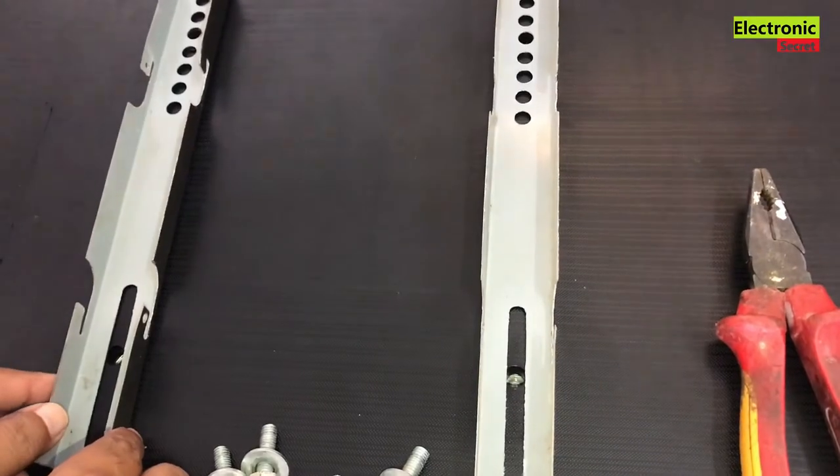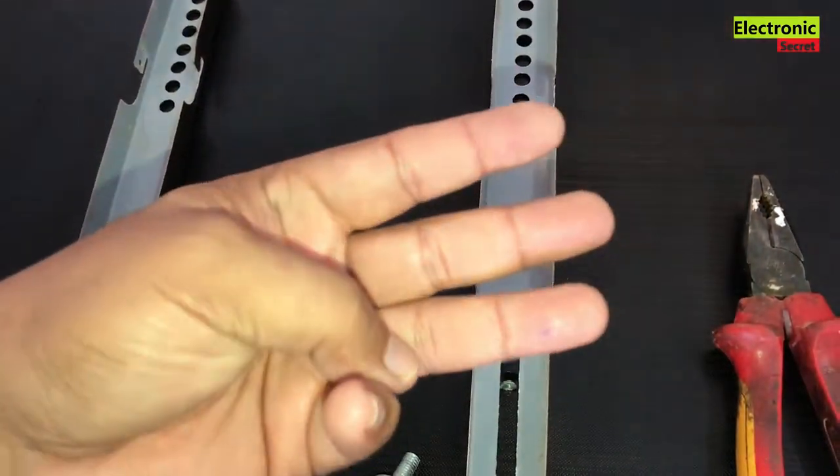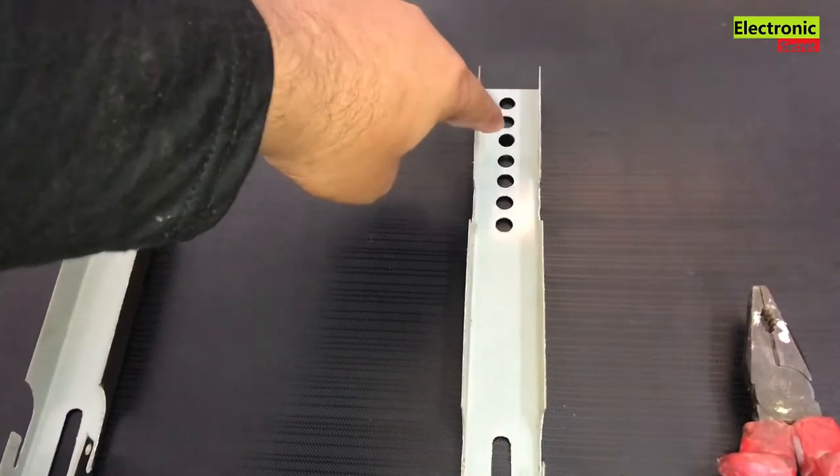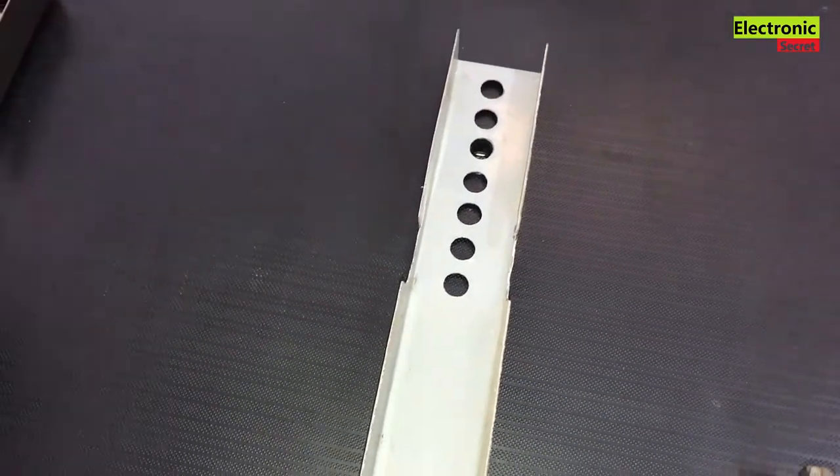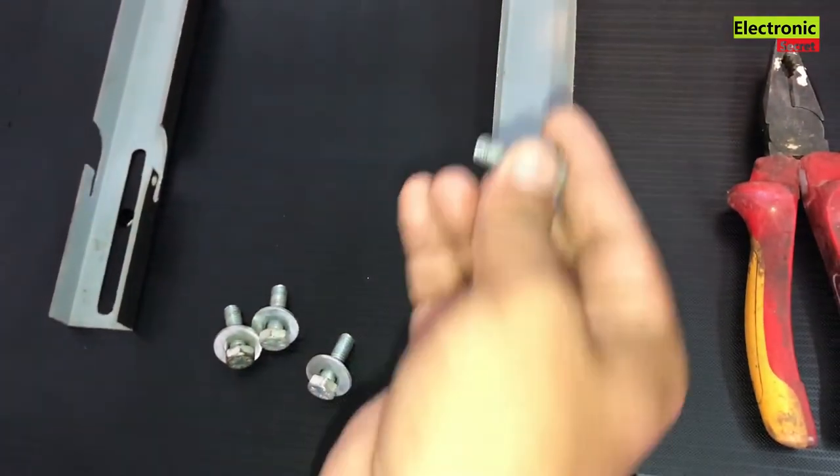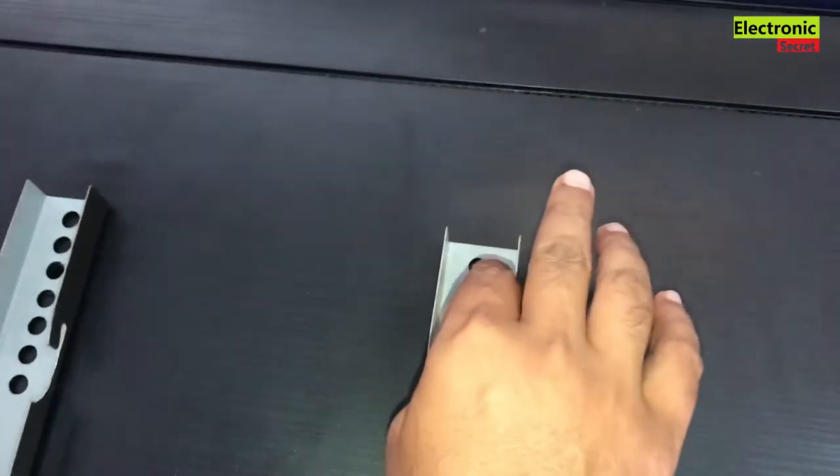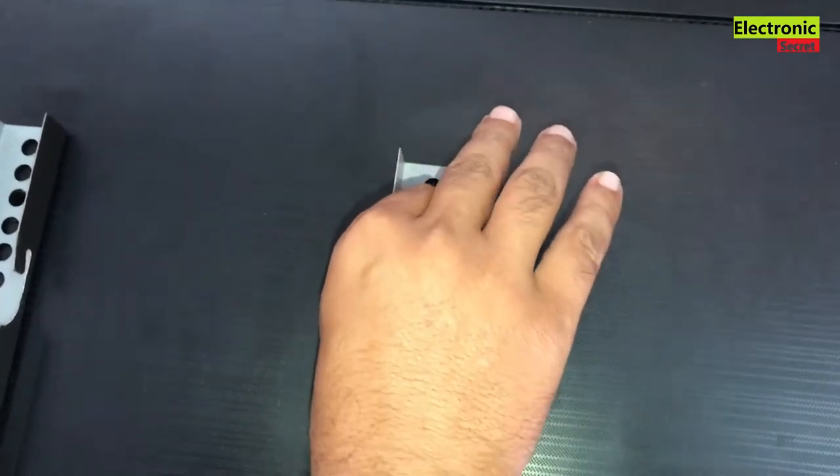Now put your TV on a table or bed with screen facing downwards and place the brackets on holes that are on the TV back side. Then insert the screws along with washers over the brackets.